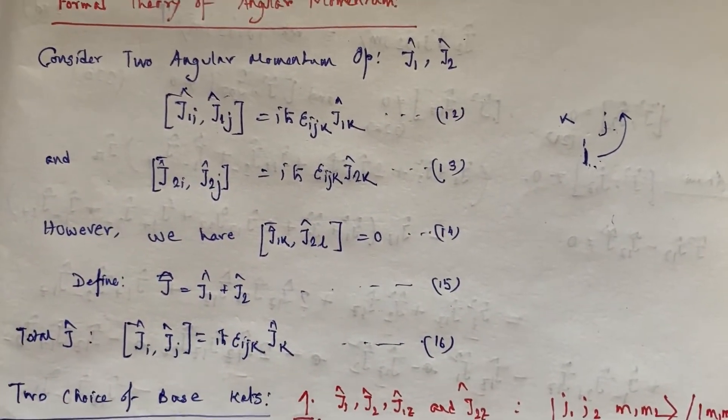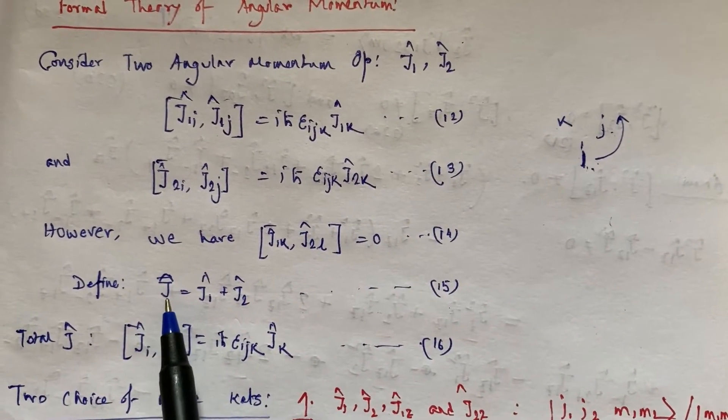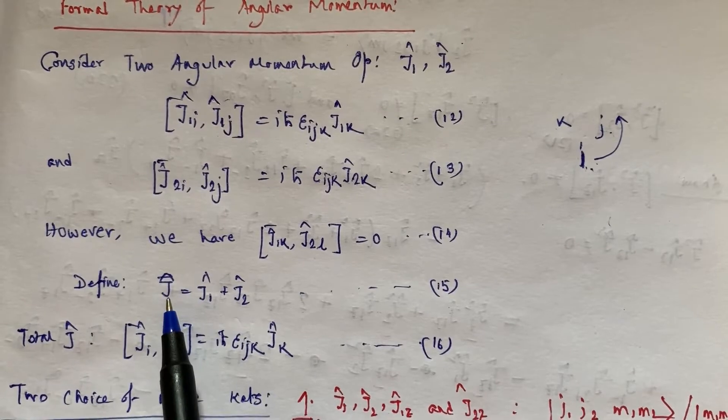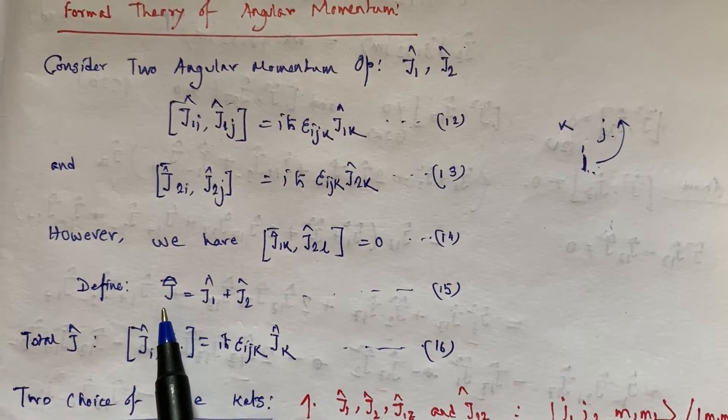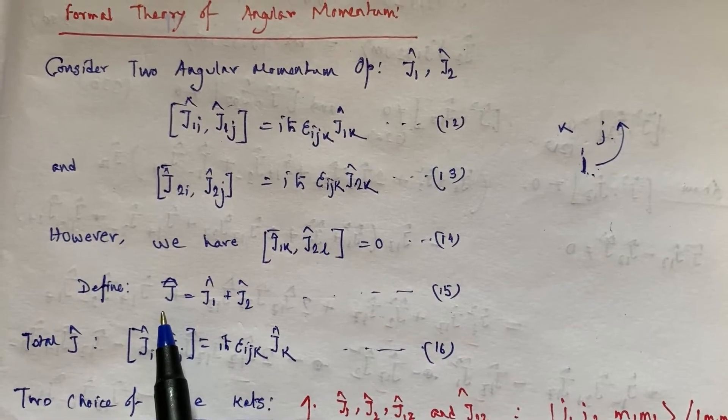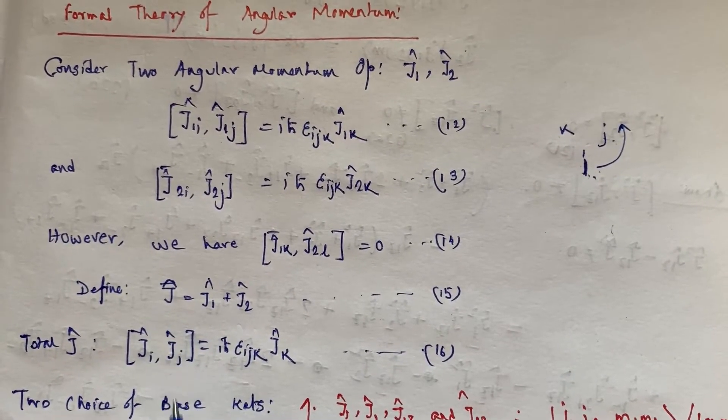Now I would like to say one thing: this J is often called the total spin of the quantum mechanical system. By spin we mean S, for example for electron S value would be half ℏ, and this spin is actually not